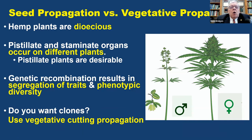If you're deciding whether to propagate by seeds or asexual propagation, remember that hemp plants are dioecious — male flowers on one plant and female flowers on another. We're primarily interested in female flowers for the different products we want to extract. With seed propagation, there is genetic recombination and segregation of traits, and both male and female plants will be produced. If you want only female plants — clones — you'll need to use vegetative propagation.